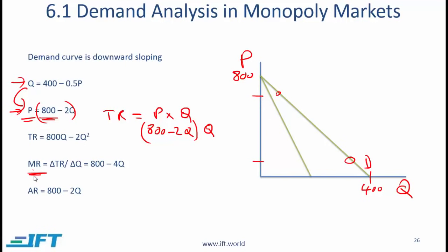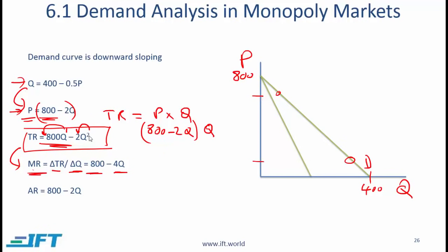Marginal revenue is the change in total revenue over change in quantity — this is the first differential of the total revenue equation. When you differentiate 800q, that becomes 800. Remember: 800q is q to the power of 1; you subtract 1 from the exponent giving q to the power of 0, which is 1, so you have 800. For the 2q squared term, the 2 multiplies by the coefficient giving 4, and then subtracting 1 from the exponent gives q. So marginal revenue is 800 minus 4q.